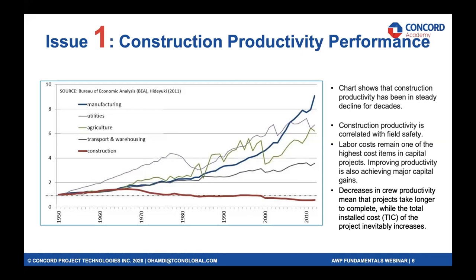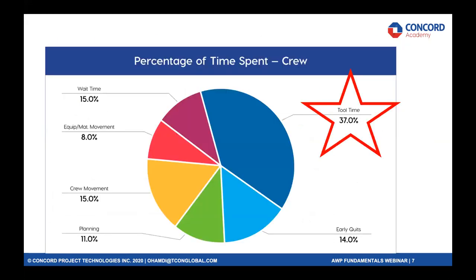Productivity is correlated with safety when it comes to labor, and labor productivity accounts for one of the major line items in construction budgets. An improvement in that will help us achieve more predictable and more productive projects. Within the advanced work packaging system, we look at labor productivity from the perspective of time spent on tools. Data from COAA and CII studies on labor productivity in the petrochemical industry shows that only 37% of the time by one worker is spent on tools.